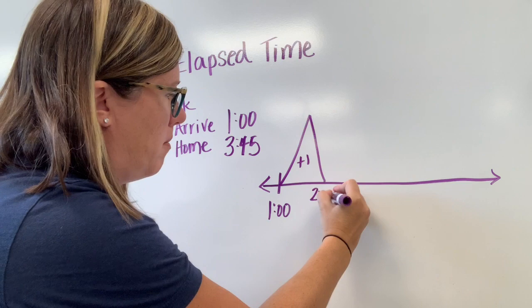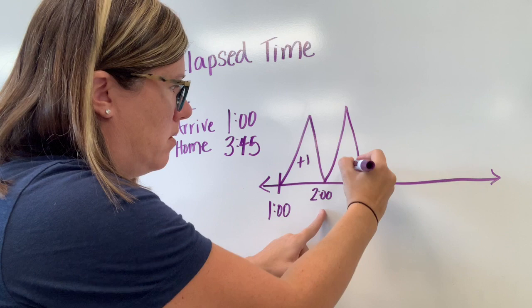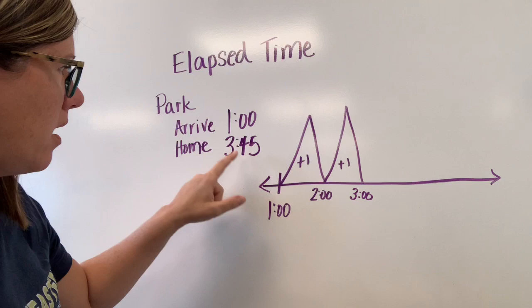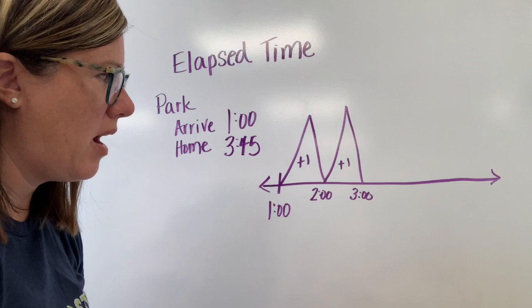So I'll do one o'clock to three o'clock. One mountain gets me to two o'clock. Another mountain gets me to three o'clock and then it looks like I'll come home at 3:45. So I have to go from three o'clock to 3:45.